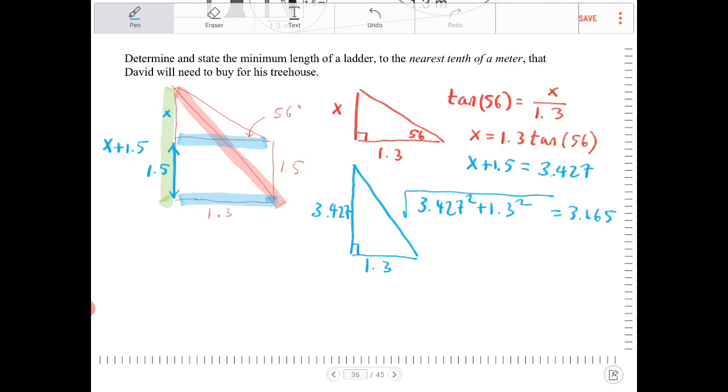And it says right here, determine and state the minimum length of the ladder to the nearest tenth of a meter. So that would be 3.7 then. So the ladder would be 3.7 meters.